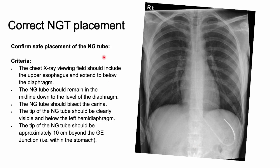This is a nice picture of a correctly placed NG tube. To confirm safe positioning, check these criteria: the chest x-ray viewing field should include the upper esophagus and extend below the diaphragm; the NG tube should remain in the midline down to the level of the diaphragm; it should bisect the carina; the tip should be seen clearly below the left hemi-diaphragm; and the tip should be approximately 10 centimeters beyond the GE junction, within the stomach.